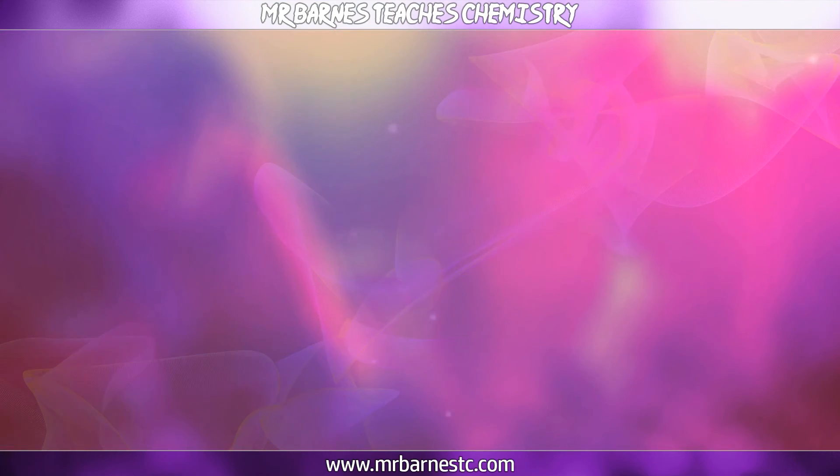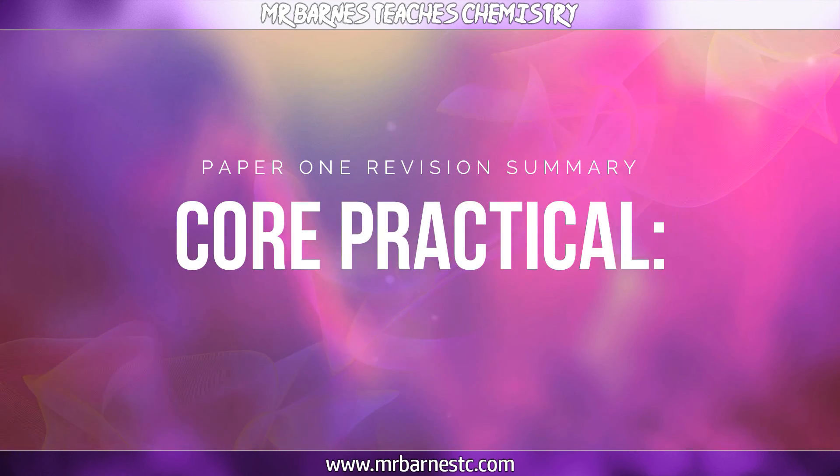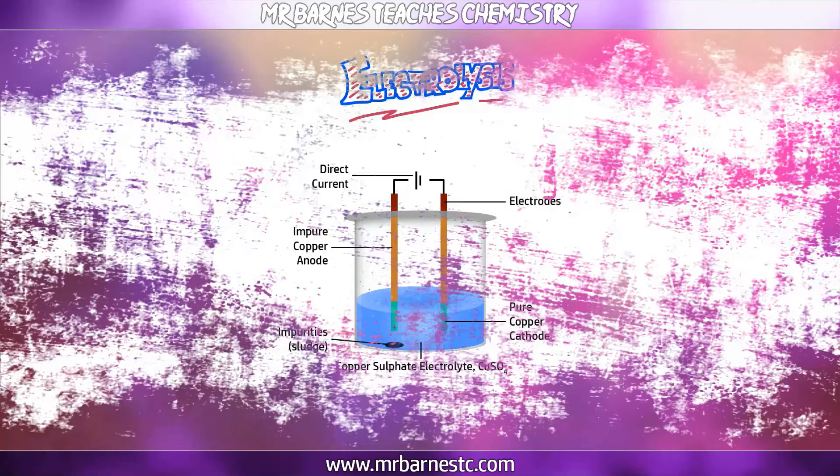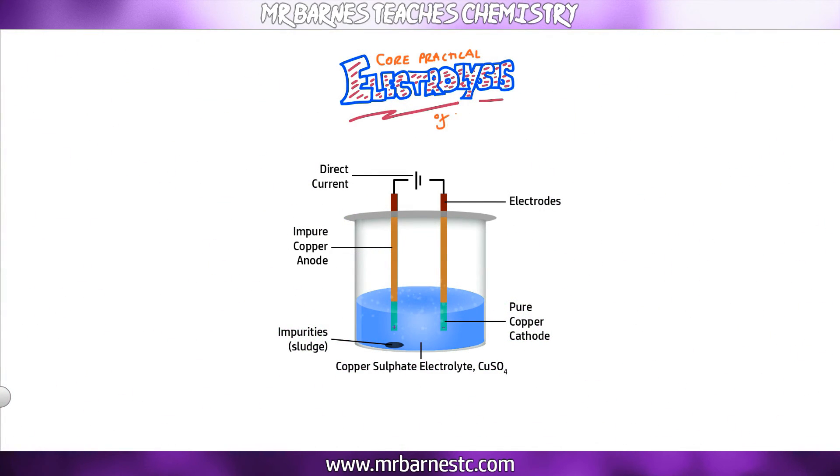On to the final section of the electrolysis video. The core practical: how can you purify copper using copper sulfate? The first thing you need to do for this practical is learn the steps. Number one, we take some copper electrodes and we clean them. The reason we're using copper electrodes is they will change in mass, and what we can do is take dirty, impure copper and purify it.